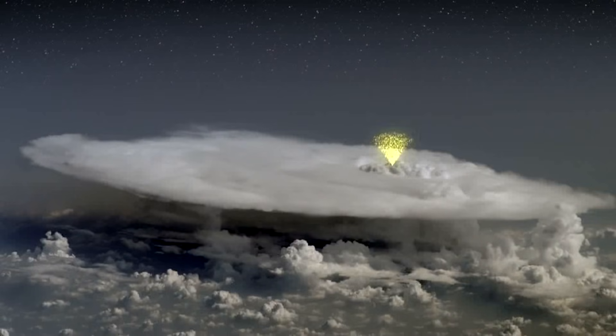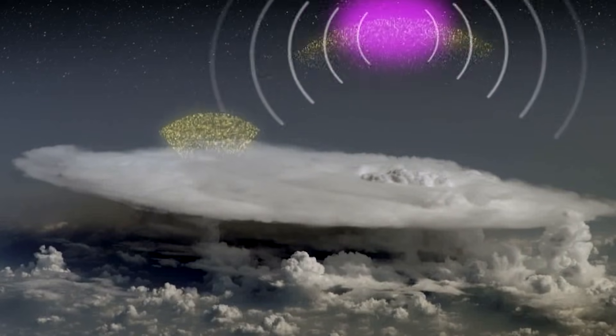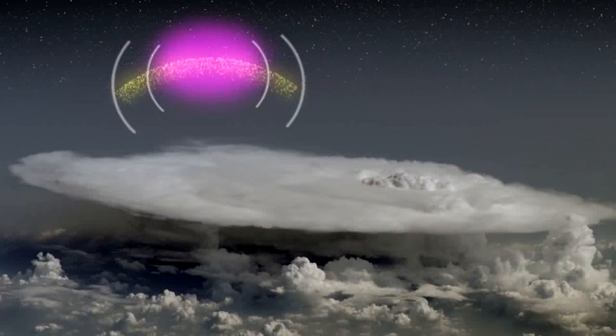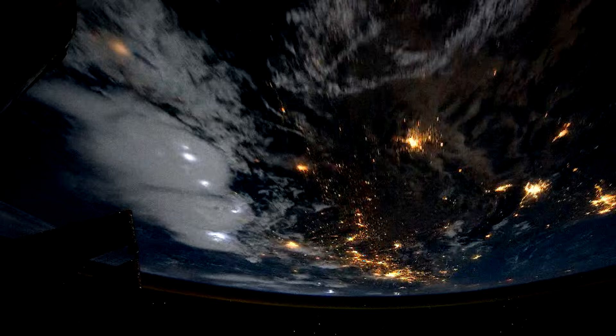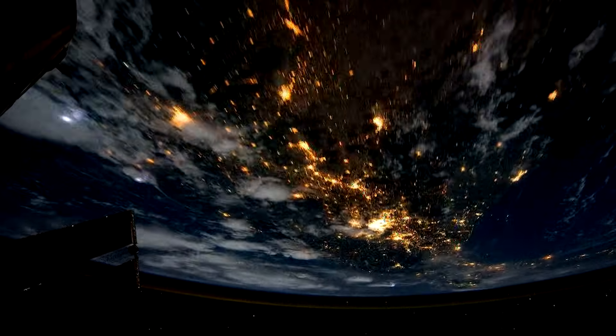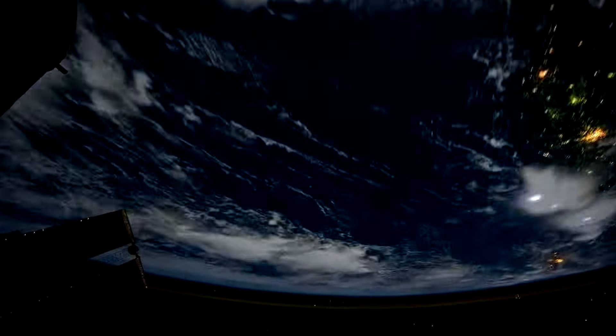Since the Earth has had an ionosphere and lightning discharges in the atmosphere, the Schumann resonance has existed. Depending on the intensity, frequency, and distribution of lightning strikes across the world, the Schumann resonance can vary in amplitude but is always present in the electromagnetic spectrum.